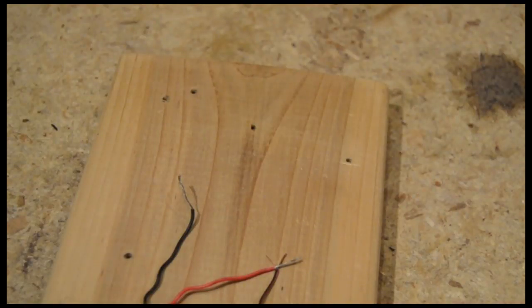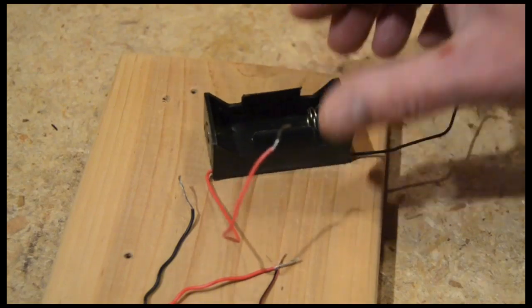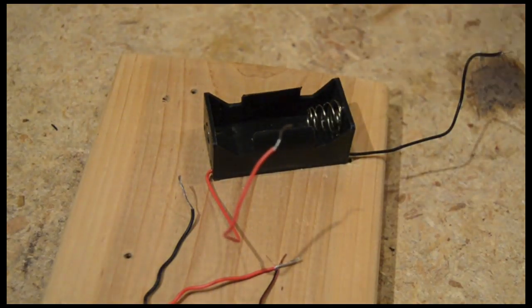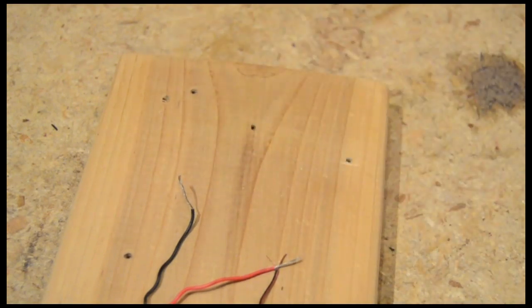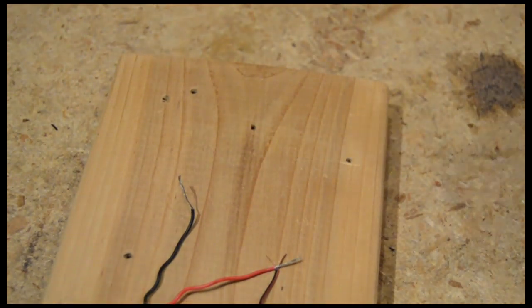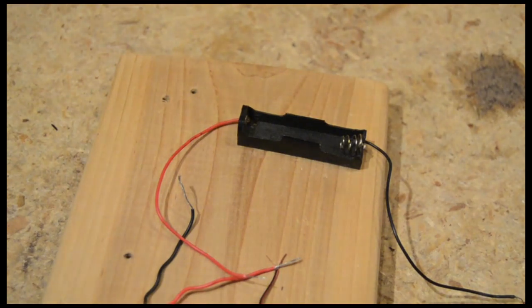You can use any size 1.5 volt battery holder. This one accommodates a C size battery. You can use one that accommodates a D battery. We're going to use one designed for a AA battery.